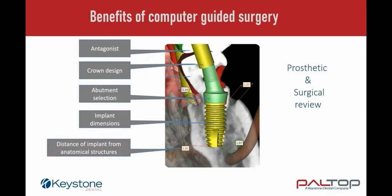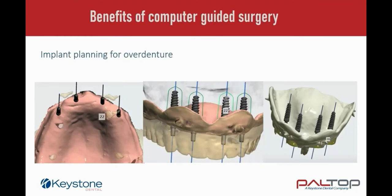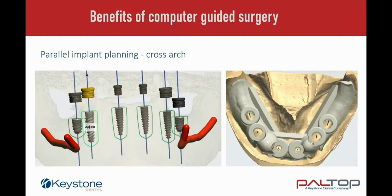Cross-sectional views of the implant planning will show the antagonist, crown design, abutment selection, implant dimensions and the distance of the implant from surrounding anatomical structures. When planning for an overdenture using the dual scan protocol, we can ensure the optimal distribution of the implants. Planning the implants parallel will guarantee an excellent path of insertion. Ensuring that the denture attachments are embedded in the greatest volume of the acrylic will prevent unnecessary breakages during use. The ability to plan cross-arch parallel implants in accordance with the anatomy offers ideal solutions for both cement and screw-retained prostheses.